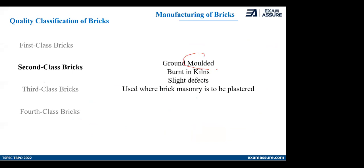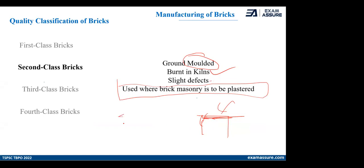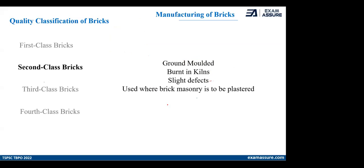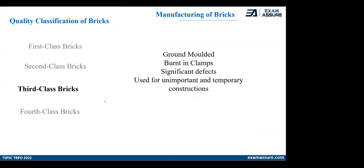In second class brick, the brick is usually ground molded, so the situation is a little bit deteriorated compared to the table molded brick, but it is still burnt in kiln. It has slight defects — not major defects — and it is usually used where brick masonry is to be plastered. If you are creating brick masonry that will be plastered — not exposing the texture of brick — you use a second class brick there.